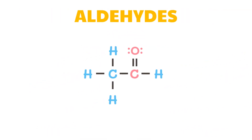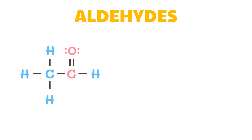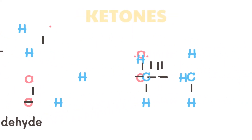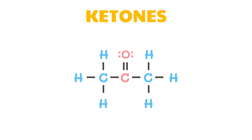In aldehydes, the carbonyl group has one hydrogen atom attached to it, together with either a second hydrogen atom or a hydrocarbon group, which may be an alkyl group, or one containing a benzene ring. The simplest aldehyde is formaldehyde, which has an irritating and pungent odor and is soluble in water. In ketones, the carbonyl group has two hydrocarbon groups attached to it. These can either be ones containing benzene rings or alkyl groups.